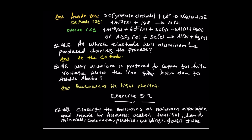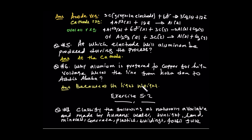Question number six: why is aluminium preferred to copper for high voltage wire? The aluminium is preferred to copper because it is lightweight. This completes exercise 5.1. Now we move to 5.2.